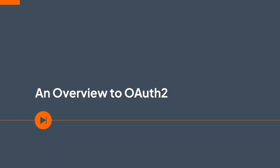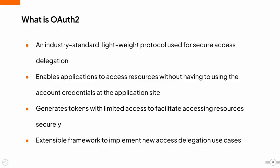Now that you know the importance of access delegation, let us explore OAuth 2, the de facto standard for access delegation. OAuth 2.0 is the industry-standard lightweight protocol used for secure access delegation. It enables applications to access resources without having to use the end-user's account credentials at the application. This mechanism generates tokens with limited access to facilitate accessing resources securely. OAuth is not just the standard — it is an extensible framework to implement new access delegation use cases.